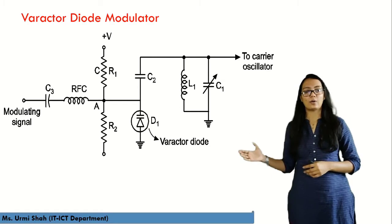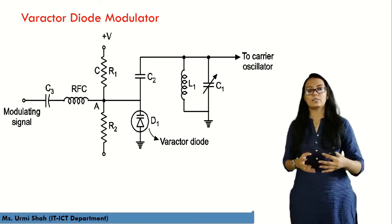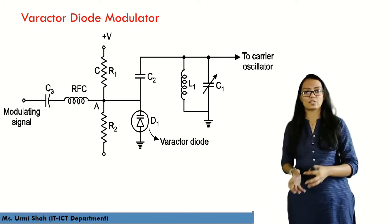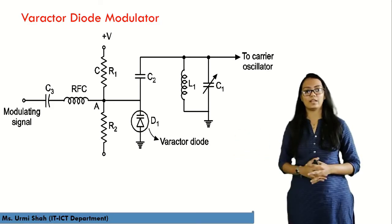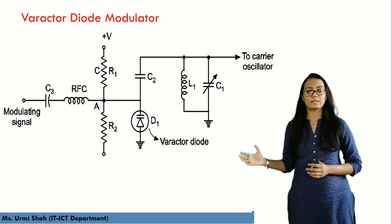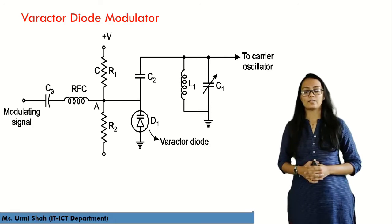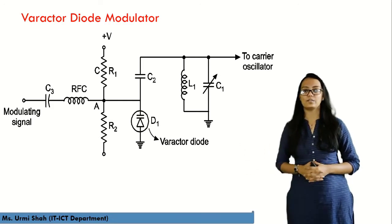When the diode is in forward bias mode, the capacitor attached to the diode charges; when in reverse bias mode, the capacitor discharges — generating a signal in the form of charging and discharging in positive and negative cycles. The signal is then passed to an LC circuit, which is a filter circuit that provides oscillation and the final FM output. This is how the varactor diode modulator circuit works.